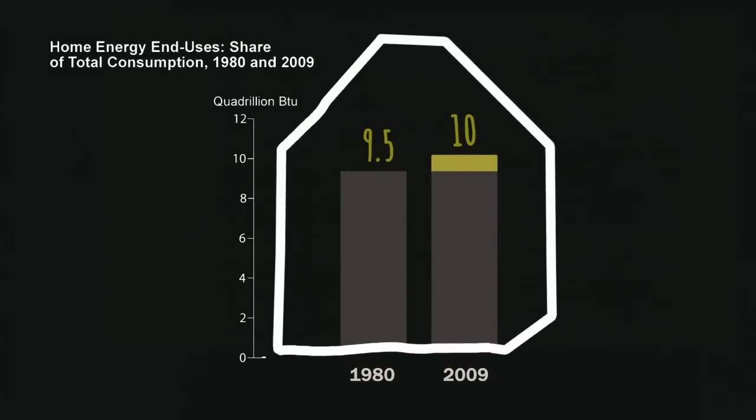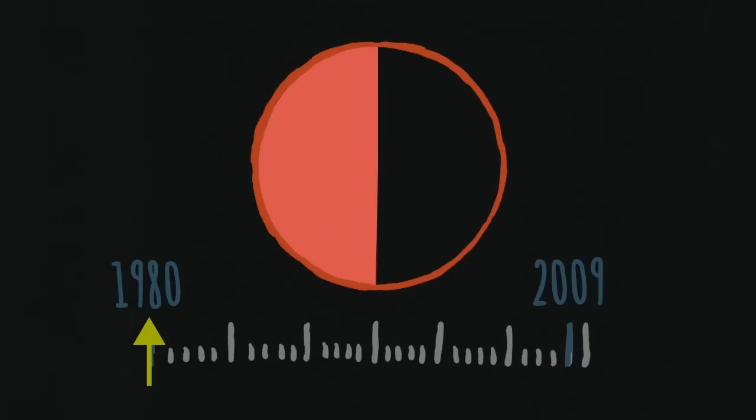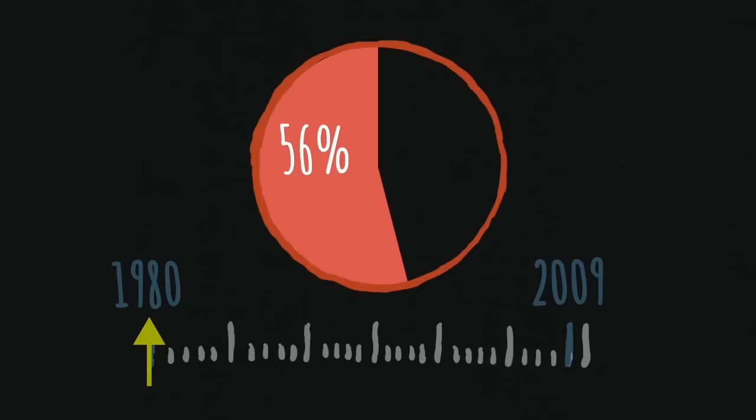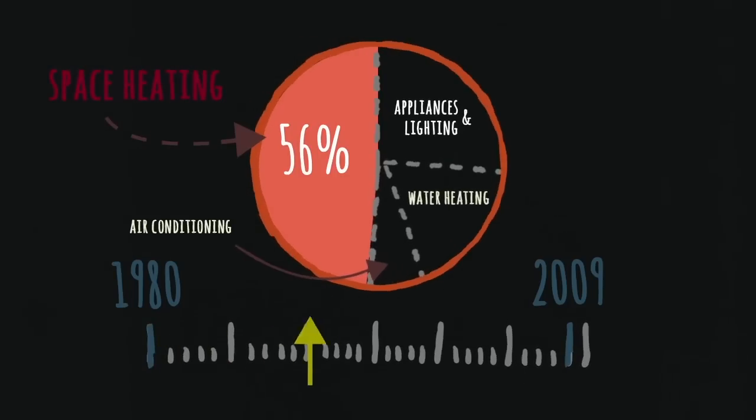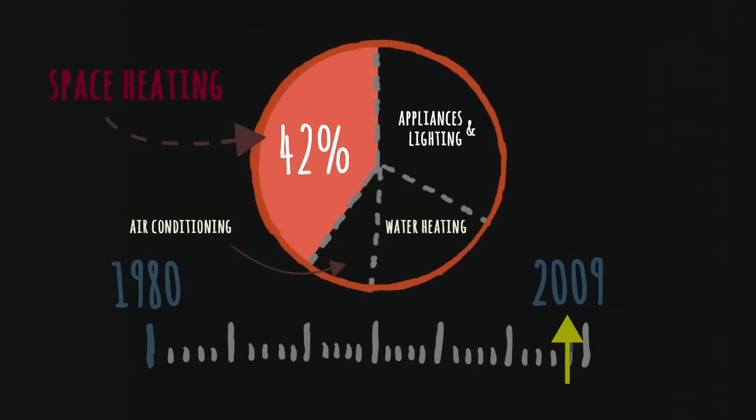Let's look at how this happened. Back in 1980, a full 56% of household energy consumption went to space heating. By 2009, that number had fallen to just 42% of the mix and had dropped in real terms as well.